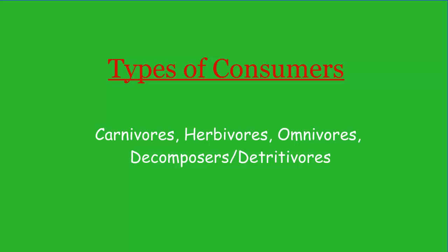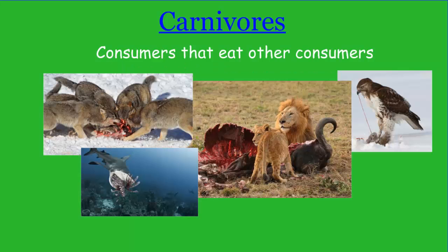We'll start with carnivores. Carnivores are consumers that eat other consumers. They're the ones that everyone remembers in an ecosystem because they're the most visible — out there eating other organisms, which is something we definitely relate to. Some examples of carnivores include sharks, wolves, lions, and hawks.